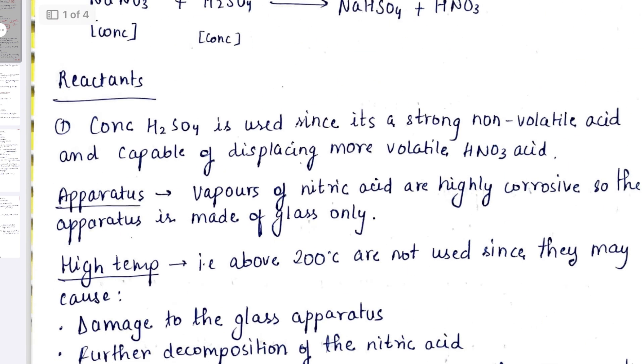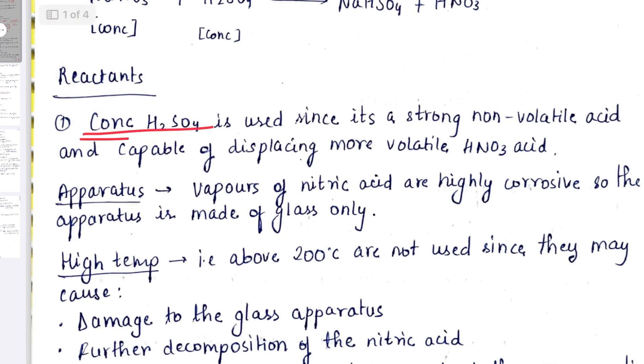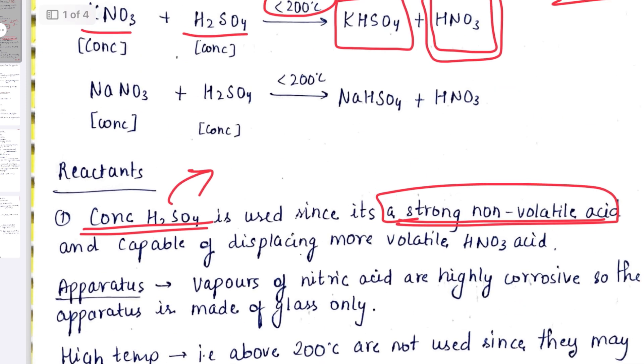The reactants: concentrated H2SO4 is used since it's a strong non-volatile acid. So they may ask you why is concentrated H2SO4 used, why not dilute? So you'll have to mention it's a strong non-volatile acid. Reasoning questions are mostly framed from this theoretical part.